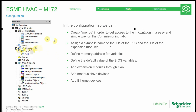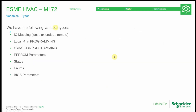In IO mappings we can define the IOs of the controller. We can define the memory address for different statuses and the BIOS parameters — the initial configuration of our machine. The variable types we can configure in the configuration tab are: IO mapping, EPROM parameters, status, enums, and BIOS parameters.